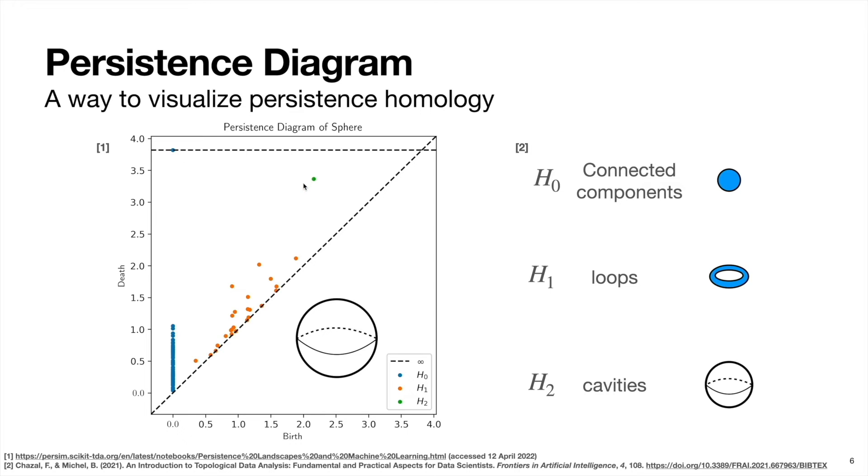So the significant topological feature of this data is captured by this green point here, which is telling us that the data is characterized by one cavity. And this makes sense since the data for this example are organized on the surface of a sphere.